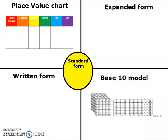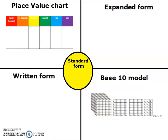Let's look at our first place value chart. We're going to fill this in to refresh your memory. In the place value chart we'll put the numbers, expanded form we'll put the numbers, in the written form we'll write the word, standard form we'll write the number, and the base 10 model is already here. So we have to decide for our base 10 model what would that be? I see right here we have a thousand, then we have 100, and then another 100, then we have 10, 10, and another 10, and then we count 1, 2, 3, 4.